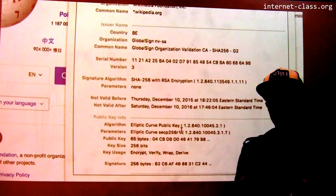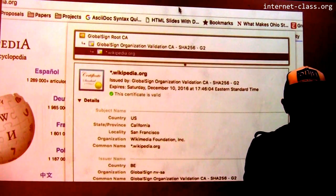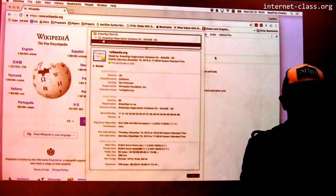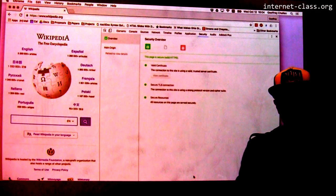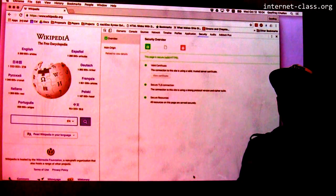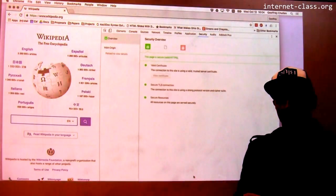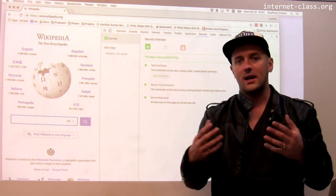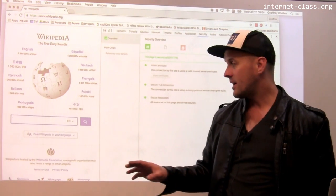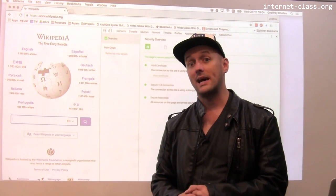So what this is, is information that the browser is telling me. And what the browser is saying essentially is that an entity that I trust has verified that this key is the correct key to use when you communicate with wikipedia.org. And that's how we bootstrap trust on the internet and prevent ourselves from being subject to man-in-the-middle attacks.